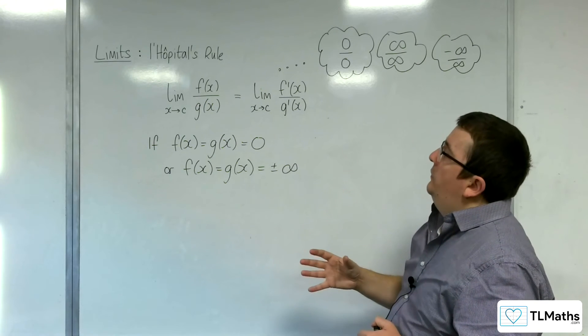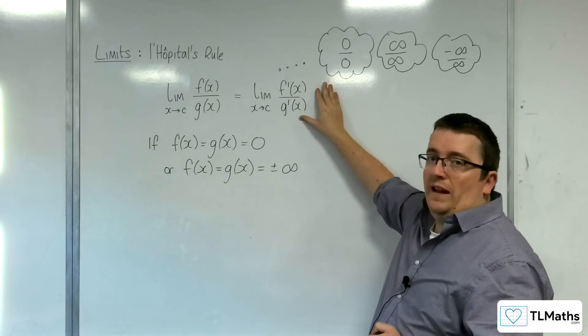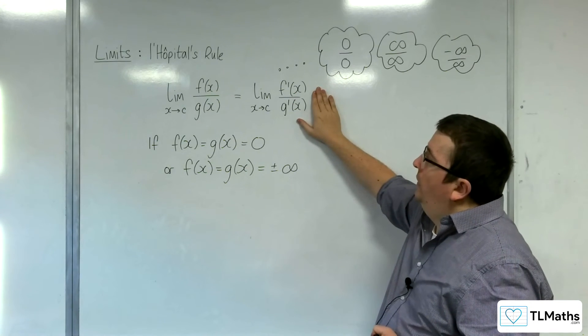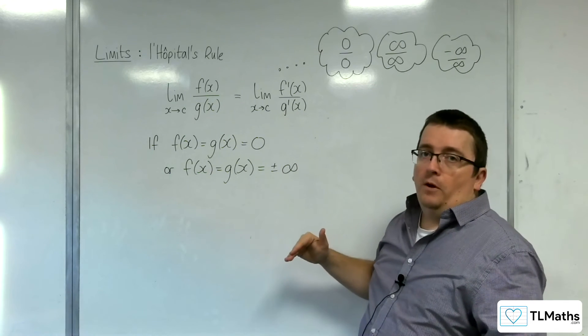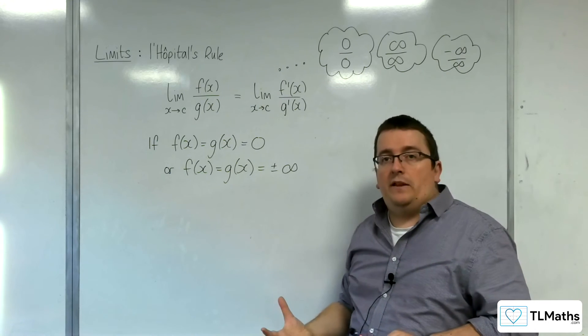It may be the case that you can't evaluate this limit either. In which case, you can then go one stage further and look at the second derivative of both functions, so one over the top of the other, and evaluate that limit instead.